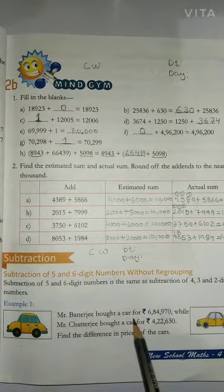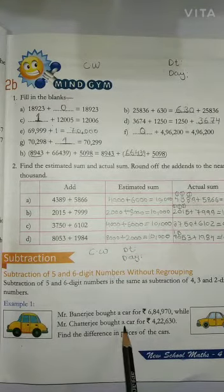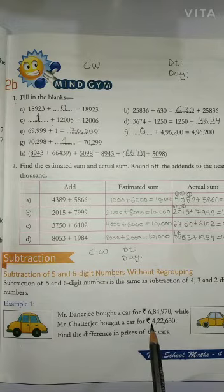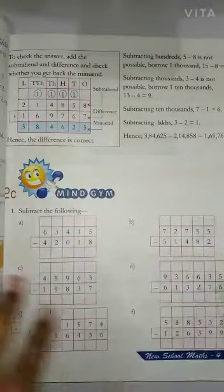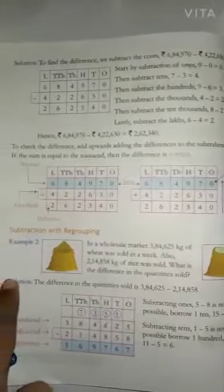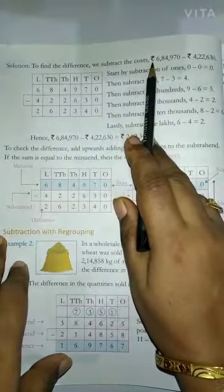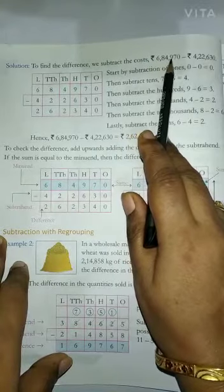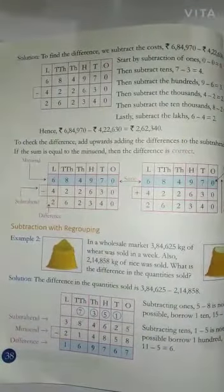Mr. Banerji bought a car for Rs. 6,84,970. While Mr. Chatterji bought a car for Rs. 4,22,630. Find the difference in price of the car. To find the difference we subtract the cost: Rs. 6,84,970 minus Rs. 4,22,630. अभी given numbers को हमने chart में put कर लिया है।